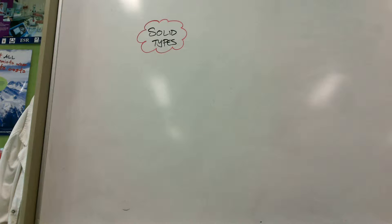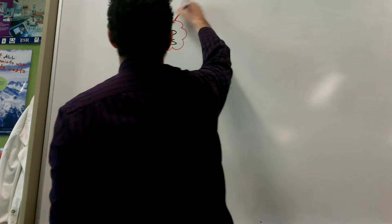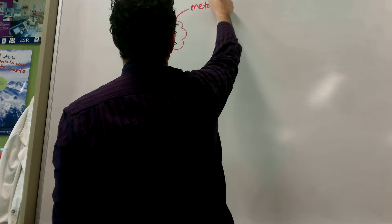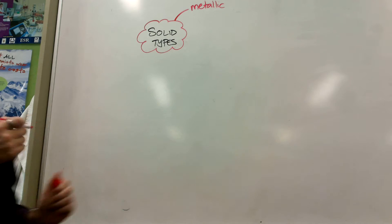So the first thing I'm going to ask the class is, what are the four types of solids that we have been introduced to this year? Metallic. Metallic. Ionic. Cool.